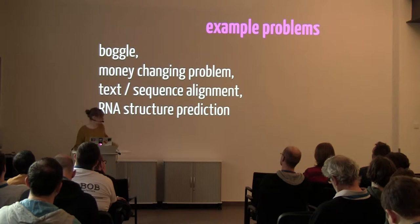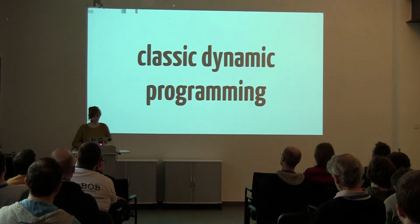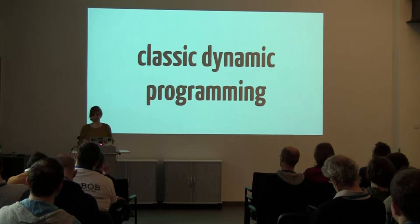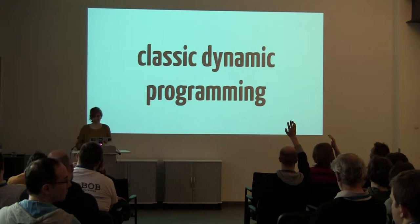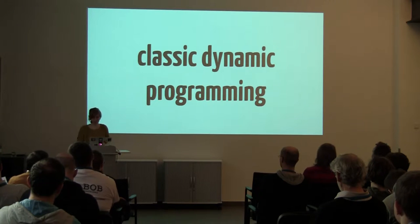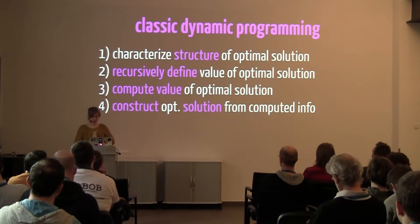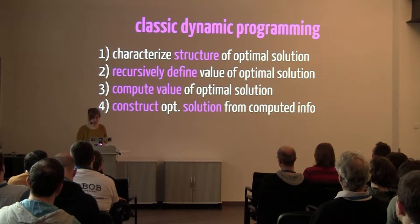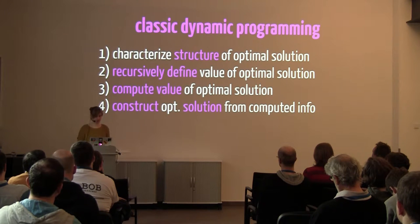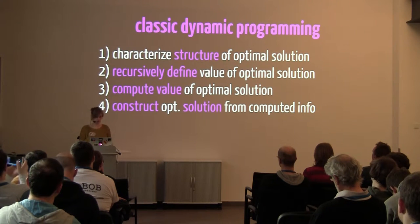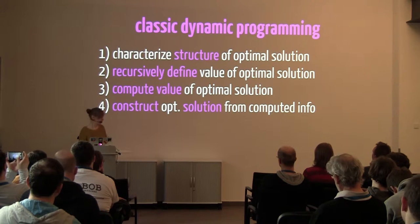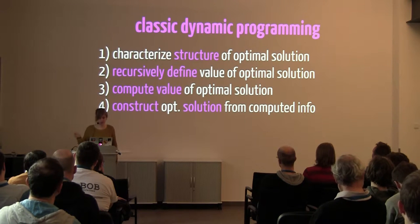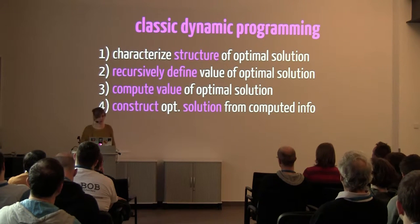Let's get started with some classic dynamic programming. If I want to solve a dynamic programming problem and I open my algorithms book, it tells me to do four steps: characterize the structure of an optimal solution; recursively define the value of an optimal solution; compute the value of that optimal solution; and then construct the optimal solution from the computed information.